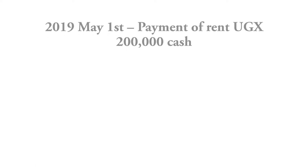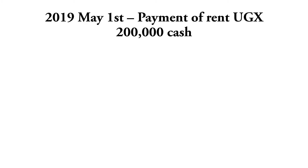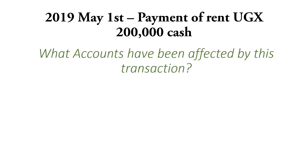We shall go straight away with the first transaction: 2019 May 1st, payment of rent 200,000 Uganda shillings. So what accounts have been affected by this transaction? When you pay rent, definitely rent is an expense. And when you pay it, you pay it using cash. So because you have paid rent using cash, the amount of cash in your business is going to reduce, and the value of the rent expense is going to increase.